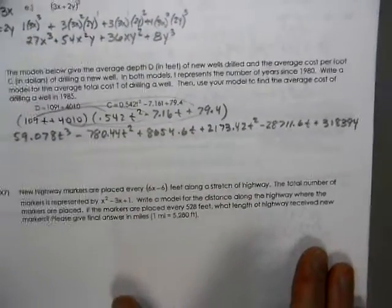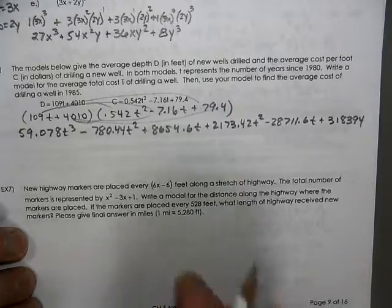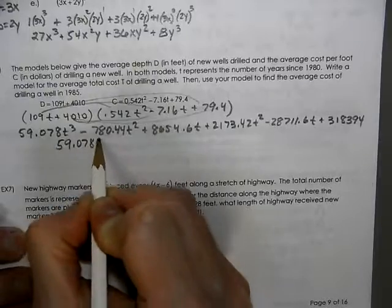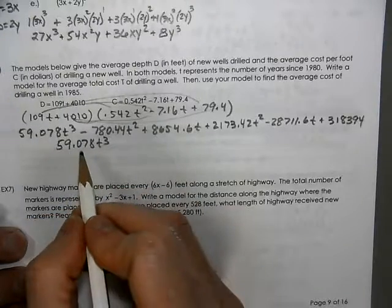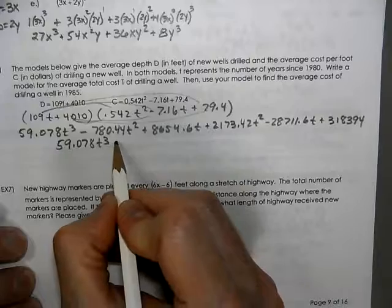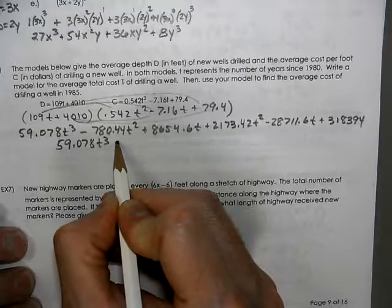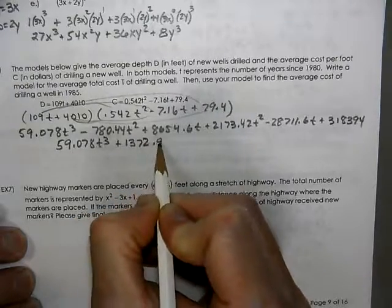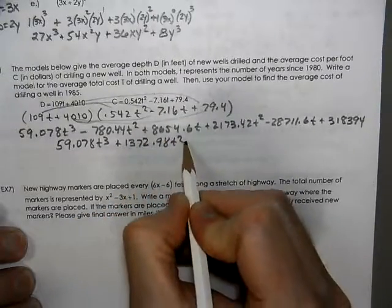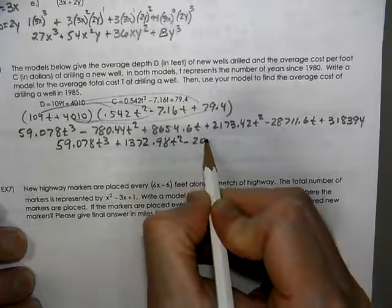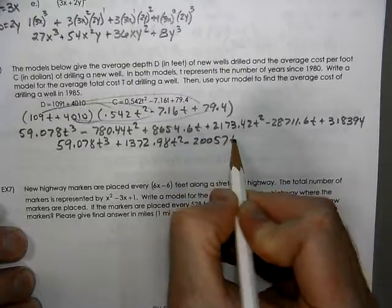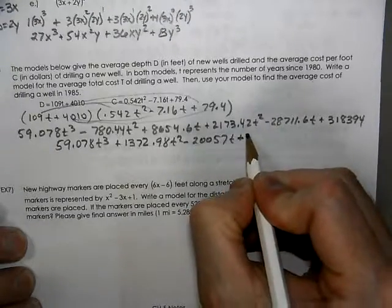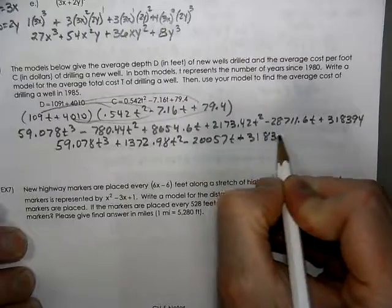Okay. So now we're going to collect some like terms. So we have our 59078t cubed and our t squares are going to come together to become a positive 1372.98t squared and our negative 20057t. So we're going to put a positive 318.394.